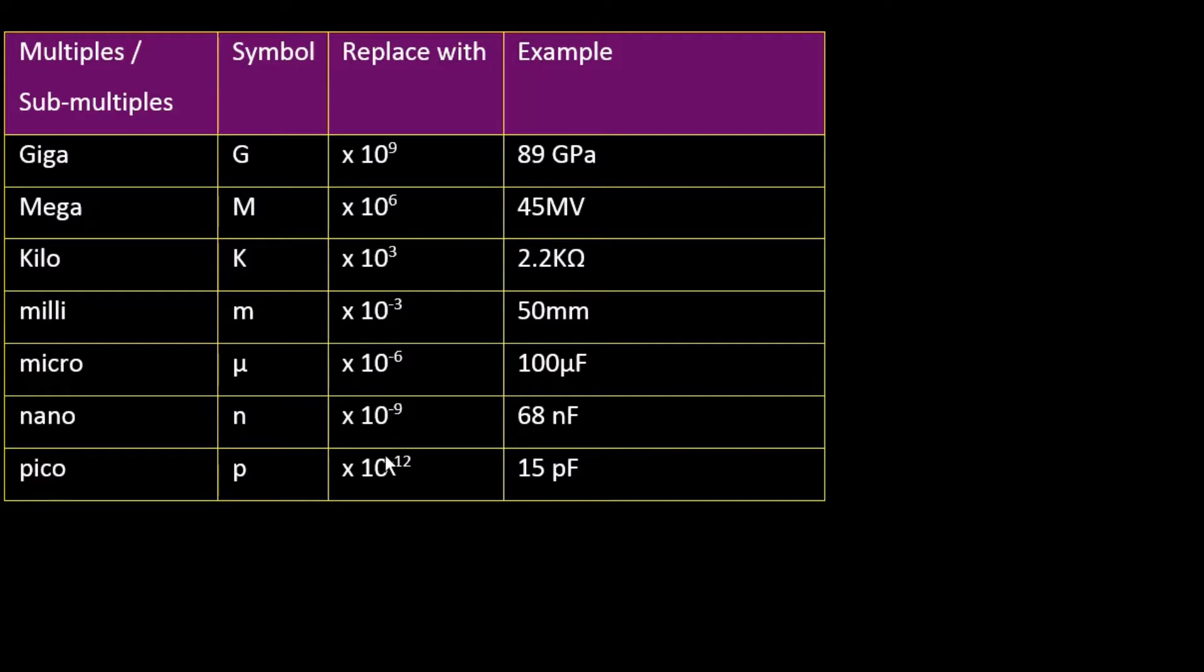These are sub-multiples now because they're smaller numbers. Micro, 10 to power minus 6, Nano, 10 to power minus 9, and Pico, 10 to power minus 12. And that's all they mean.